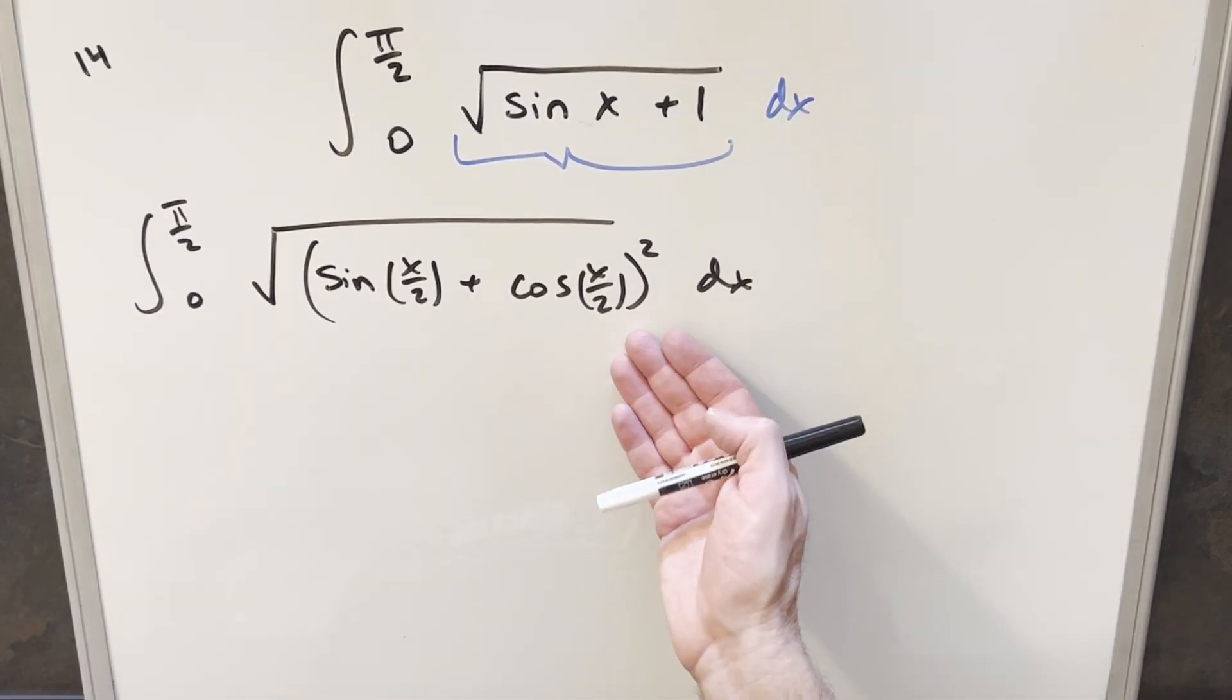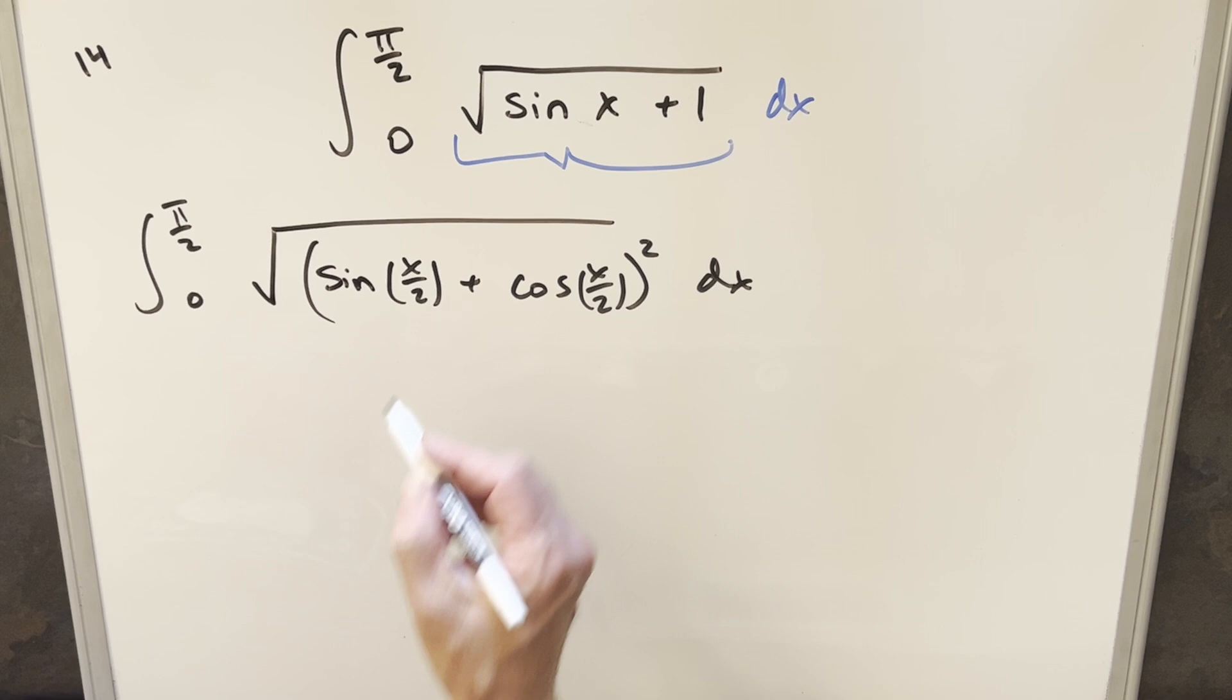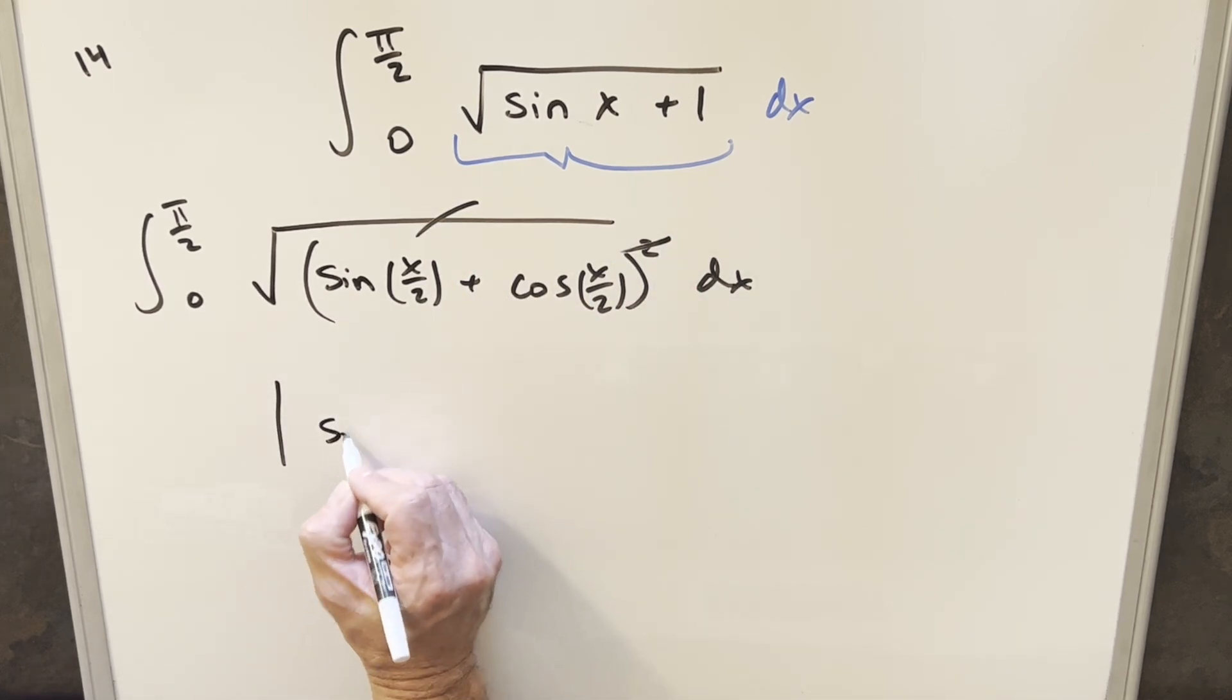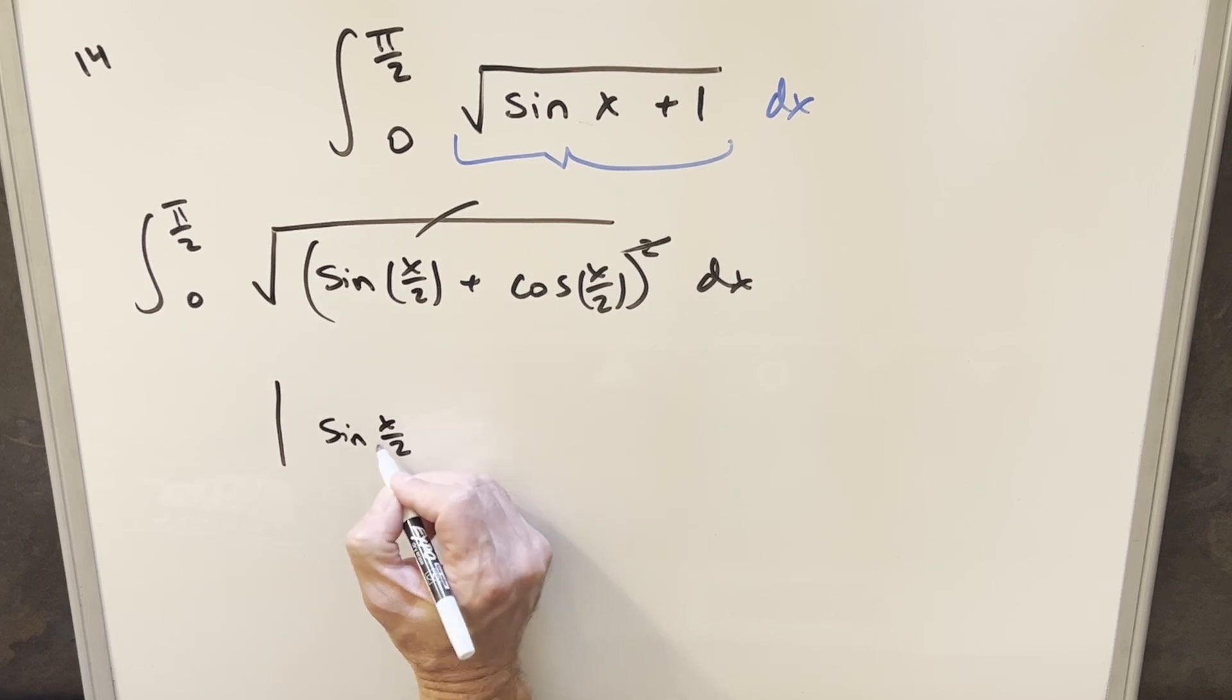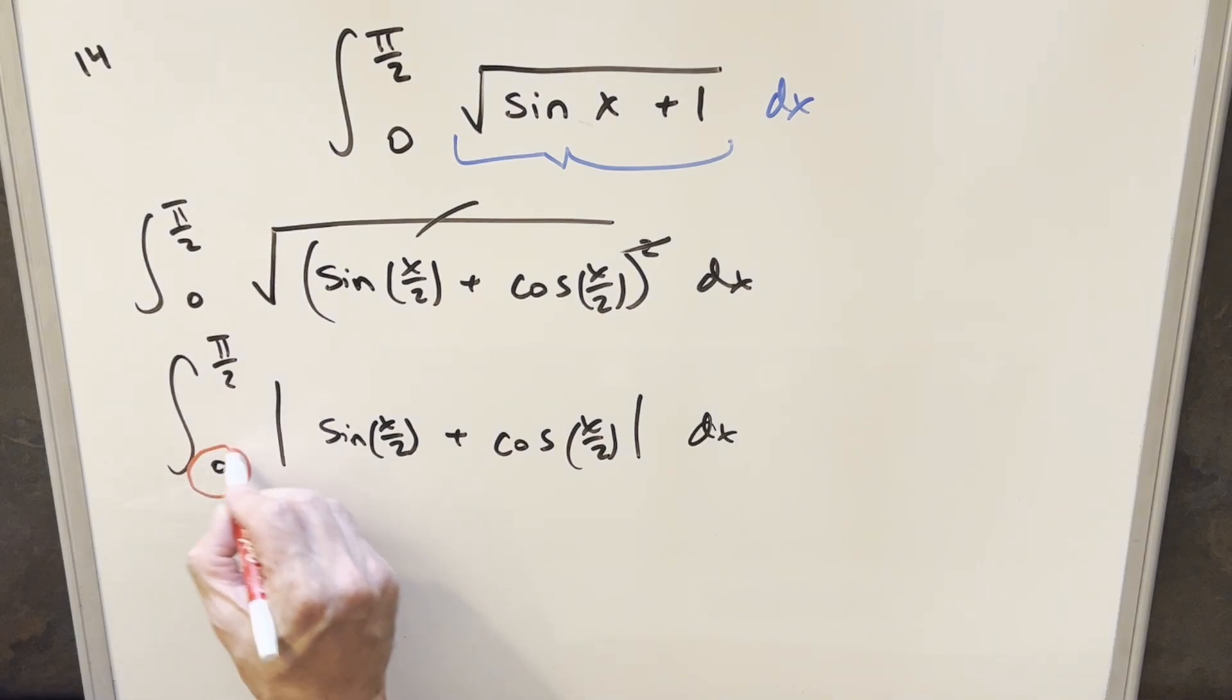And then here, now that we have this rewritten, we've got something squared inside the square root. So what we can do is we can kind of cancel the square with the square root, except for when we rewrite it. Let's do it with absolute value just to be careful with this. But then the absolute value is not really going to be a problem because of our bounds.